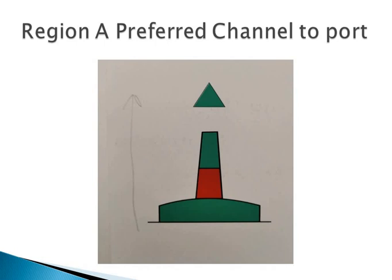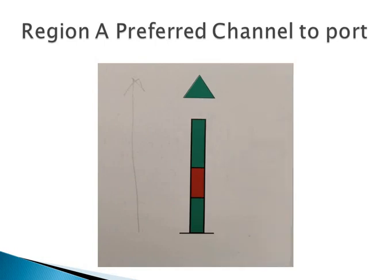The green cone indicates Region A preferred channel to port: color green with one broad red horizontal band, top mark single green cone point upward, light green, rhythm composite group flashing 2+1.